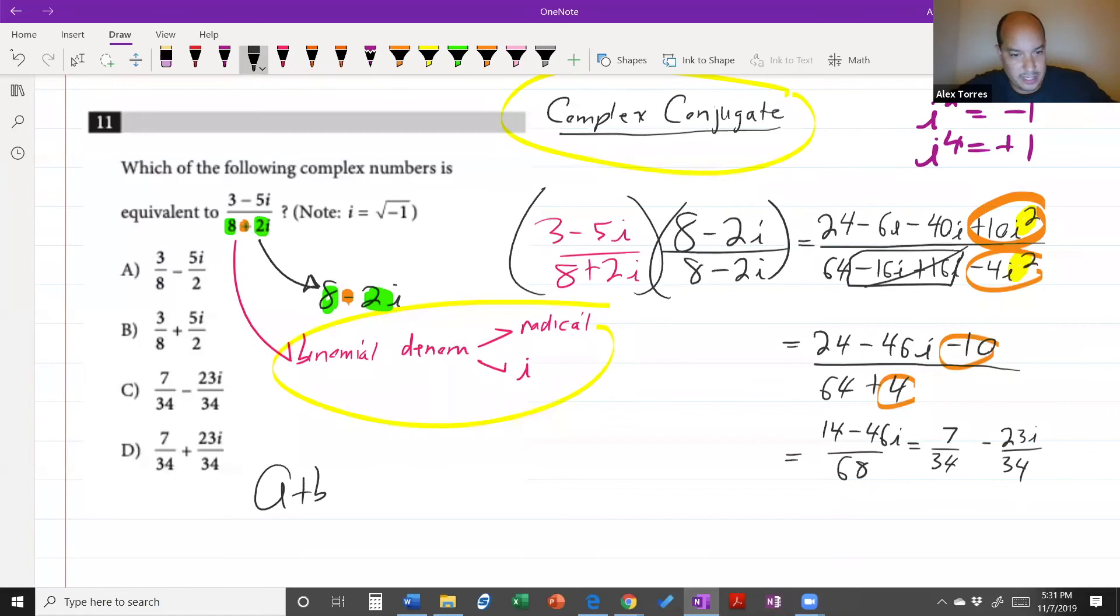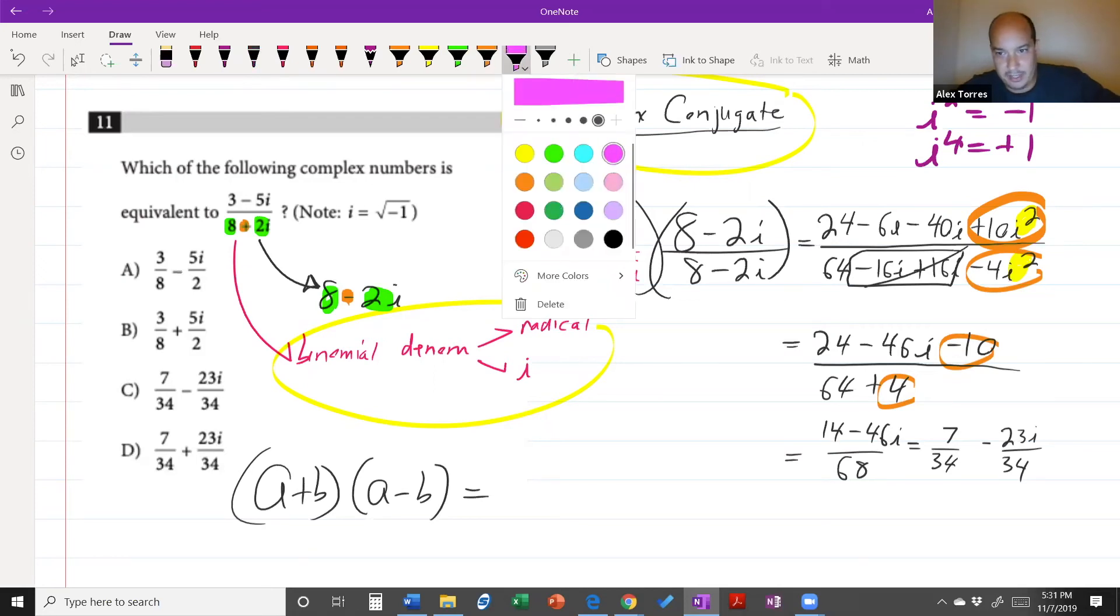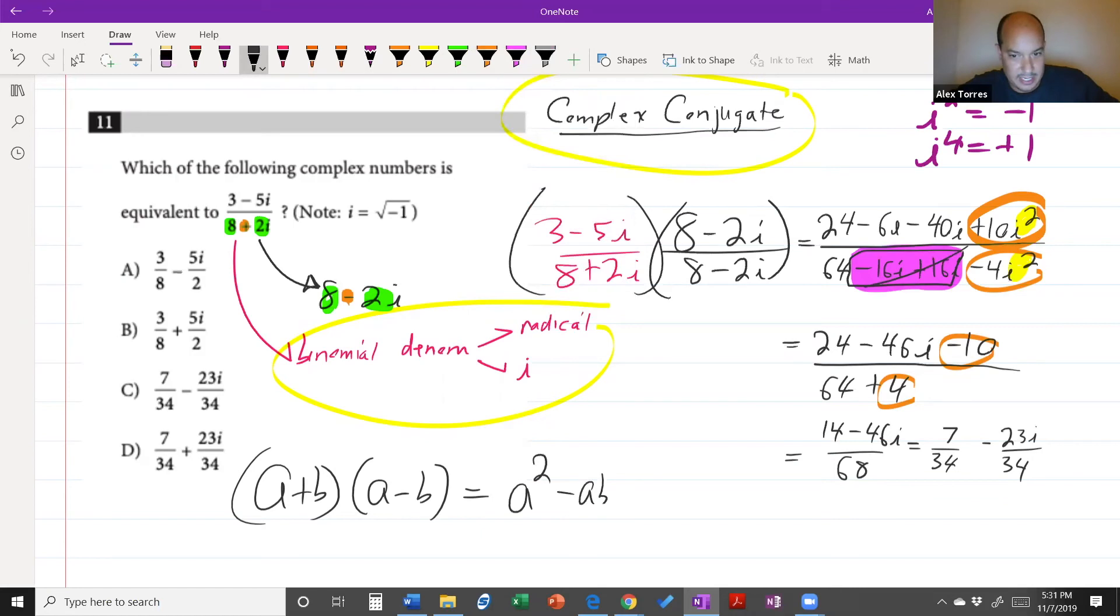when you multiply a plus b times a minus b and you FOIL it out, you're always going to have this purple thing happening right here. Because if I do first outer inner last, I'm going to have a squared minus ab plus ab minus b squared, and this is always what's going to happen.